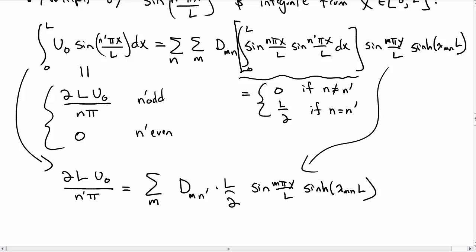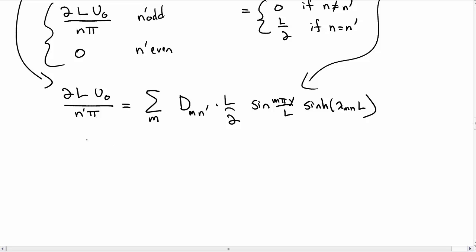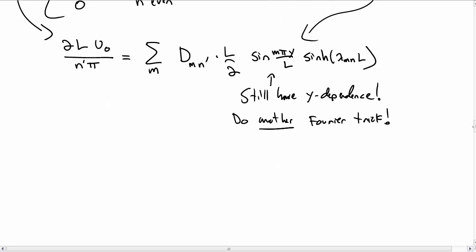This sin(mπy/L) came down from the previous line because we didn't do anything with the y direction yet. But we still have this y dependence, so we can't actually solve this equation for our constants d_mn. So we need to do yet another Fourier trick in order to isolate the d_mn'.